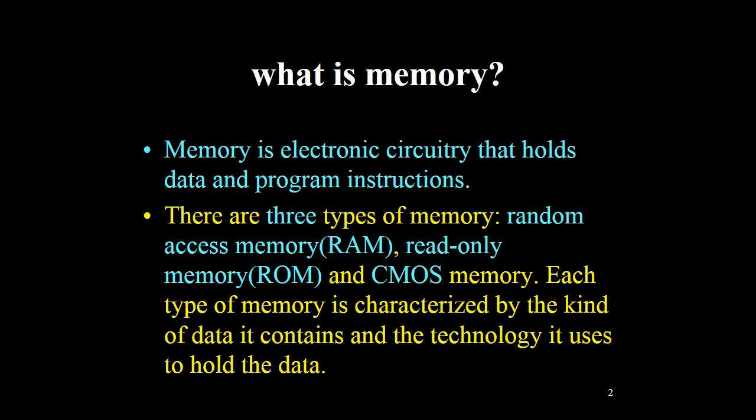What is memory? Memory is electronic circuitry that holds data and program instructions. There are three types of memory: random access memory, read-only memory, and CMOS memory. Each type of memory is characterized by the kind of data it contains and the technology it uses to hold the data.